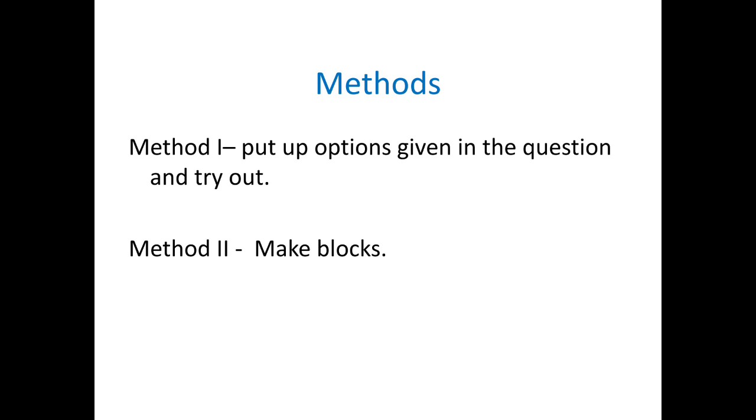There are two methods possible. Method 1 is that we put up the options given and try out by dividing by 7, but this is going to be very long. So method 2 is we make blocks. Now we will see how to follow this method.